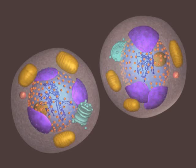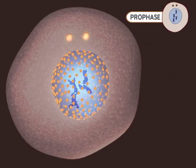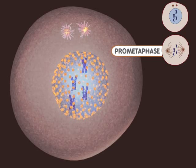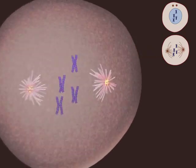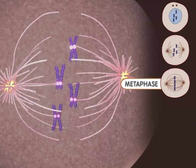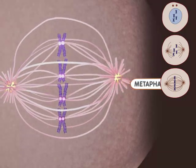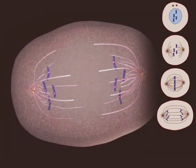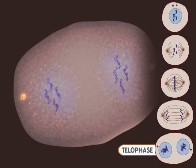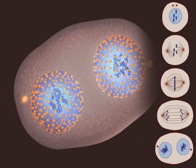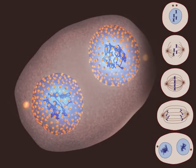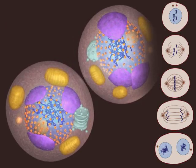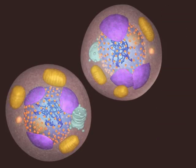Let's watch the process one more time. Mitosis begins with prophase — notice the DNA condensing into chromosomes. Microtubules appear during prometaphase, and the nuclear membrane breaks down. Metaphase occurs when the chromosomes are aligned at the center of the cell. During anaphase, the chromosomes are moving apart. The telophase stage is marked by the appearance of new nuclear membranes. This is the end of mitosis. Finally, the splitting of the cell occurs during cytokinesis. The two new cells are now ready to grow and perform their specialized functions.